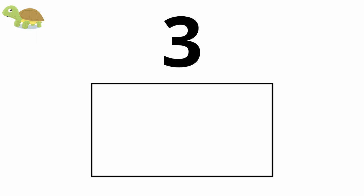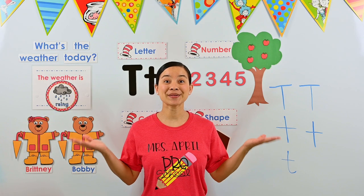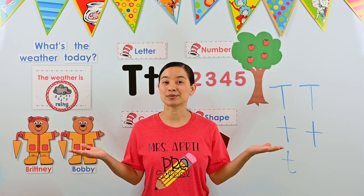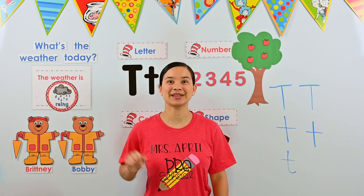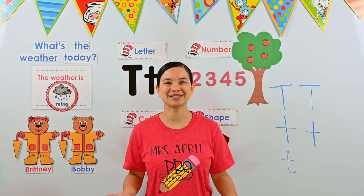Let's look at our last number. What number is this? It's the number three. Let's put three turtles in the box. Count with me: one, two, three. Perfect. Now we have three turtles in the box. Great job, friends! You helped me put the right amount of turtles in the box based on the number we saw.